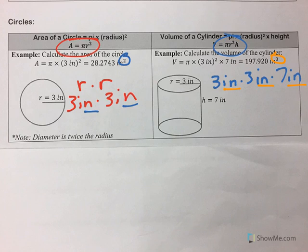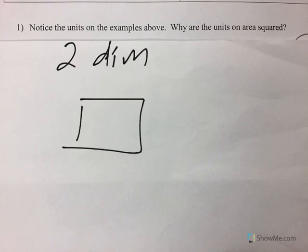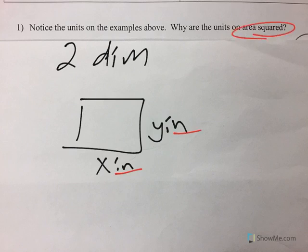So we are going to be using rectangles and circular shapes in some problems here. So why are the units on area squared? Because it's 2-dimensional. When you're looking at it, you have length and width. So because there are 2 of them, the units are squared.